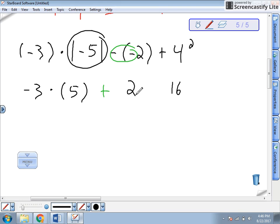So we've still got some multiplication. So three times positive five now is negative 15 plus two. That should be a plus sign, plus 16. So negative 15 plus 16 plus two is negative 13. 16 negative 13 plus 16 is positive three. There is our answer.